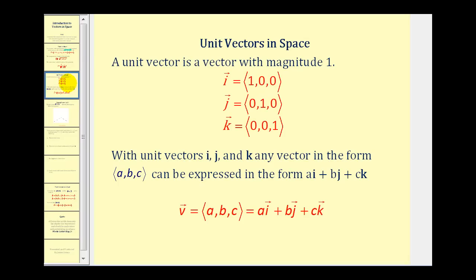Let's talk a bit more about unit vectors. I is the unit vector ⟨1, 0, 0⟩, or the unit vector along the positive X axis. Vector J is ⟨0, 1, 0⟩, the unit vector along the Y axis. And vector K is ⟨0, 0, 1⟩, the unit vector along the positive Z axis.